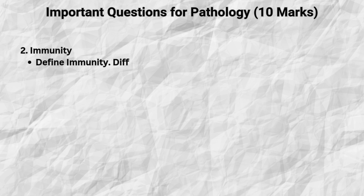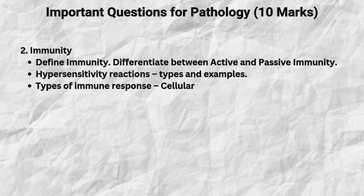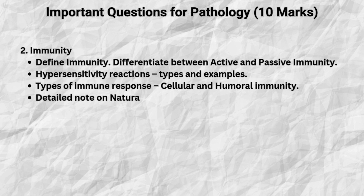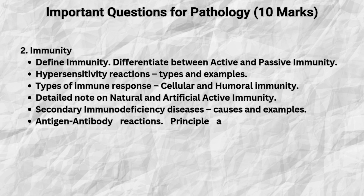Now moving to immunity, also very important in paper 1. Define immunity and differentiate between active and passive immunity. Describe hypersensitivity reactions with types and examples. Discuss the types of immune response — cellular and humoral. Write a detailed note on natural and artificial active immunity. Explain secondary immunodeficiency diseases with causes and examples. Understand antigen-antibody reactions, especially the principle and use of agglutination.